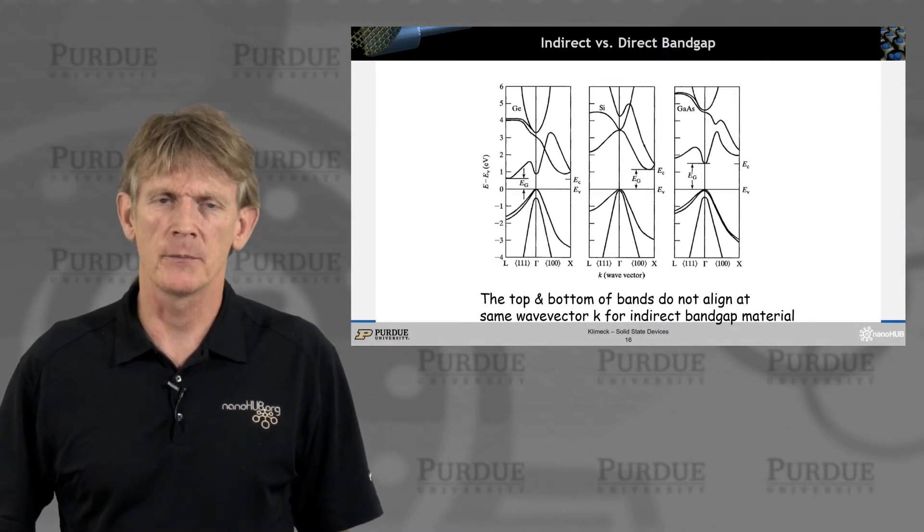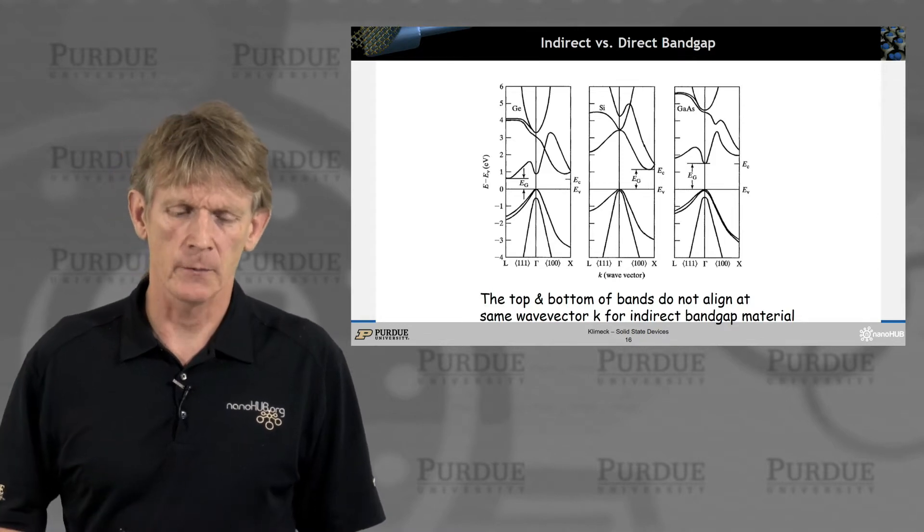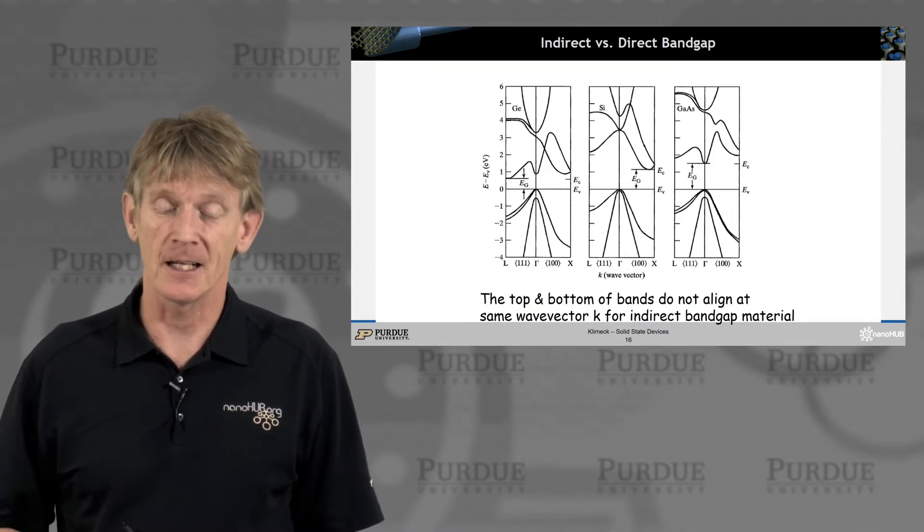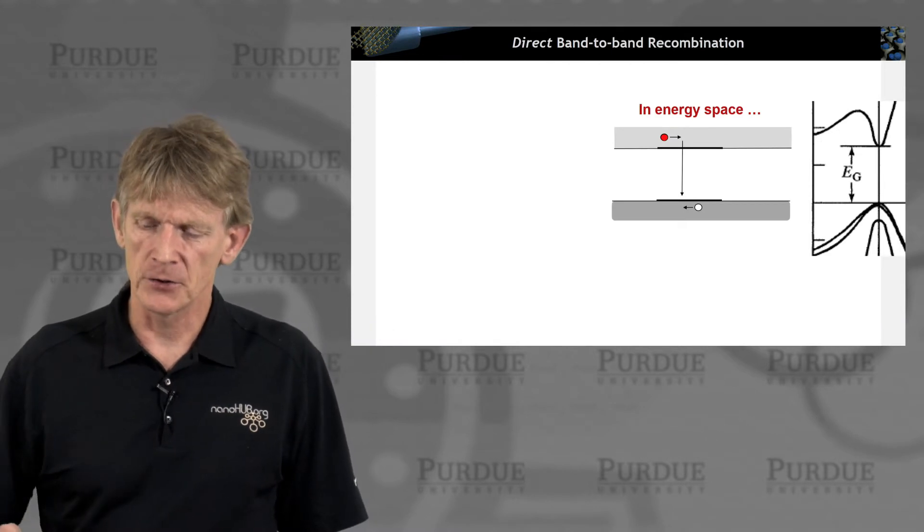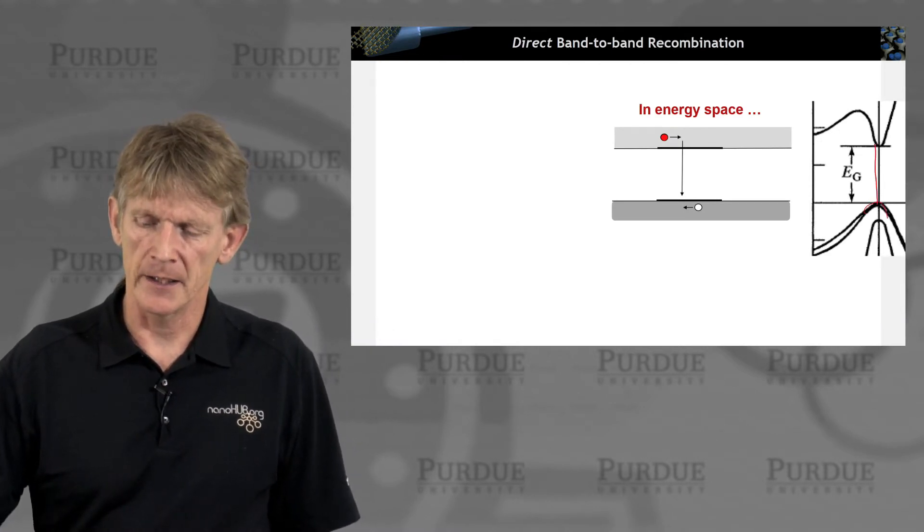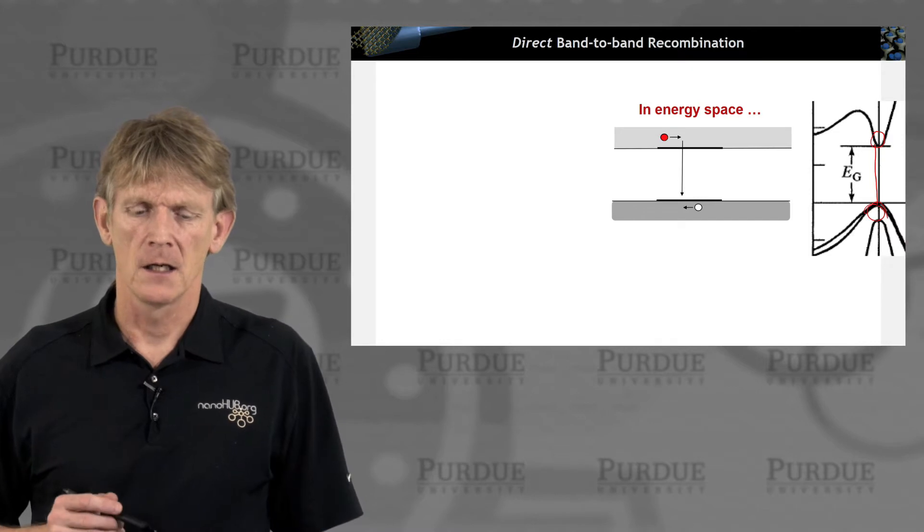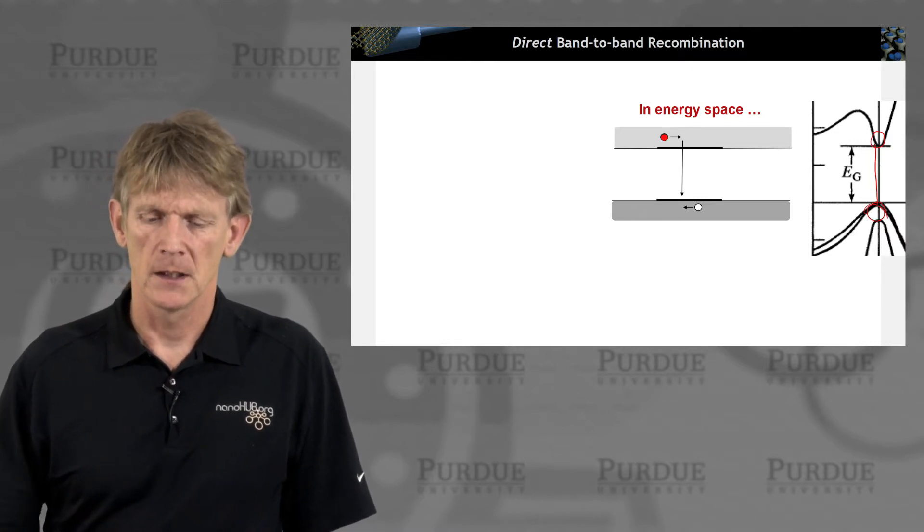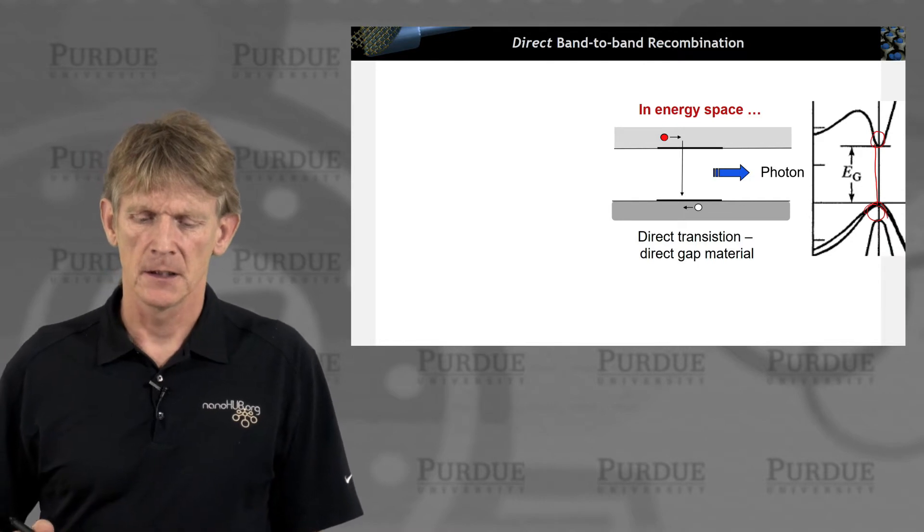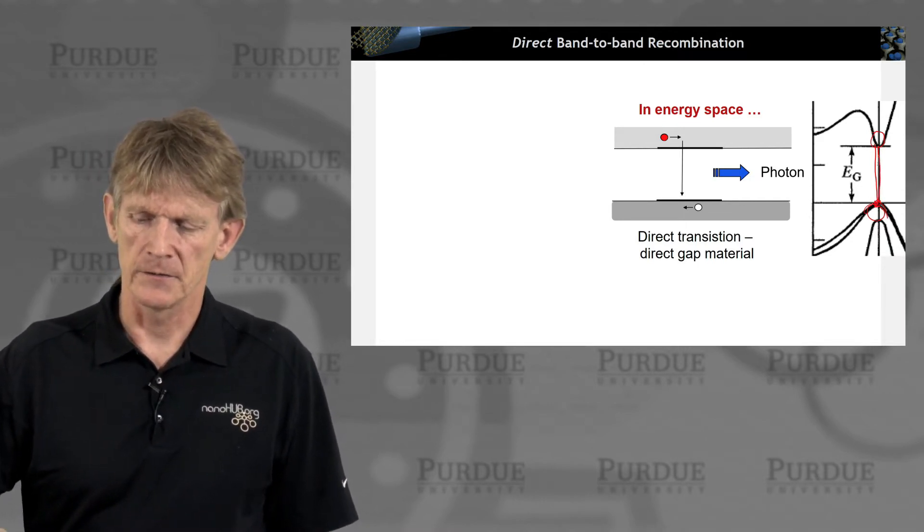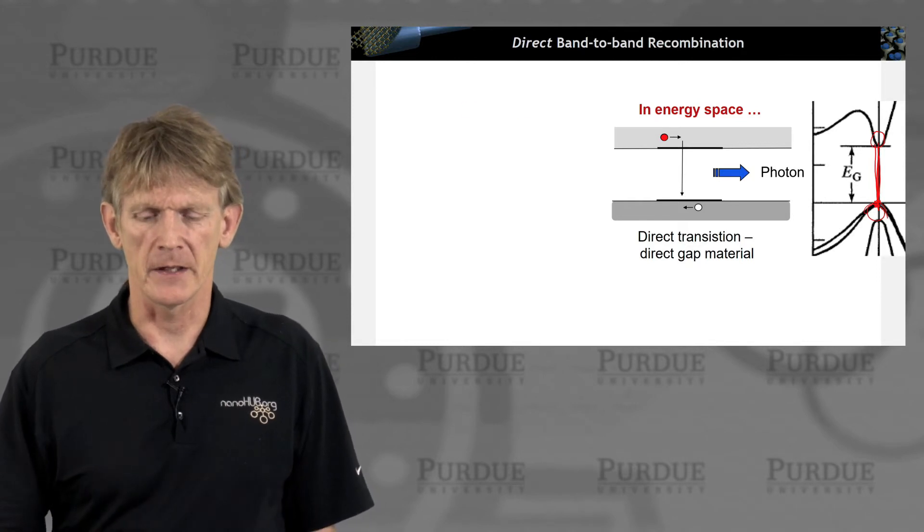We had described band structures of materials already. So you recognize, of course, on the left germanium, and this one in the middle is silicon, and gallium arsenide on the right. Let's look at gallium arsenide. It's a direct gap material. So from the gamma point there are bands. Remember there are spherical bands here and there are spherical bands here. You can have a direct recombination of electrons with holes. And if that happens, a photon comes out. It's called a direct gap transition in a direct gap material. And direct means the valence band and conduction band minima are on top of each other.